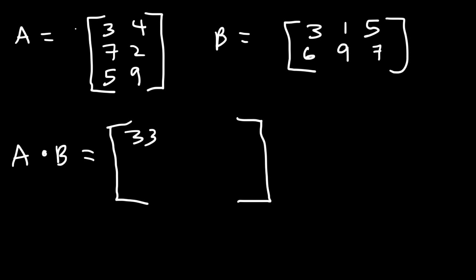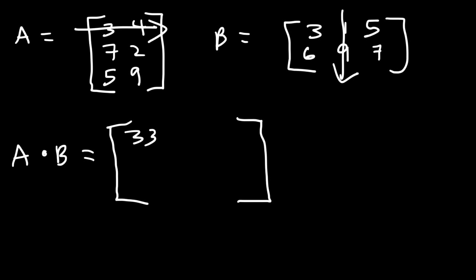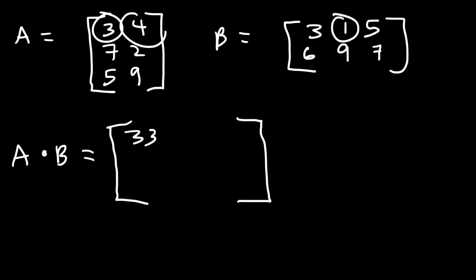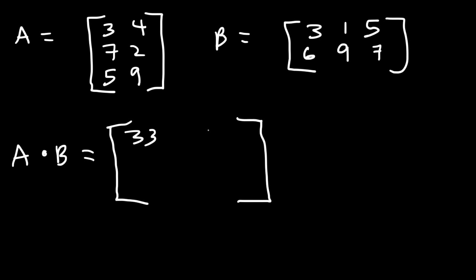Now let's multiply the first row by the second column — that entry will go in the first row, second column. So we have 3 times 1 which is 3, plus 4 times 9 which is 36. Thirty-six plus 3 is 39.